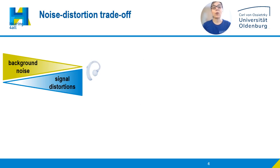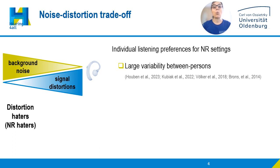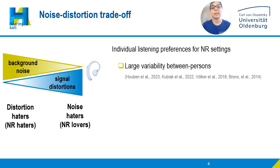People with comparable hearing thresholds have shown large variability in their listening preferences for noise reduction settings, with distortion haters preferring weak noise reduction to keep signal distortions to a minimum, and noise haters preferring aggressive noise reduction despite the presence of more distortions. Latest studies also identified an additional intermediate category.